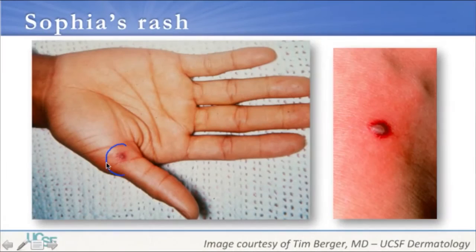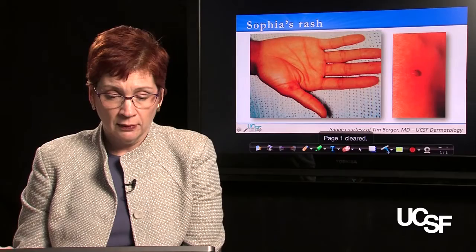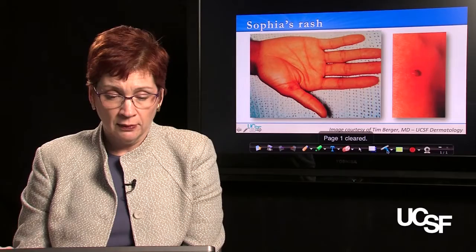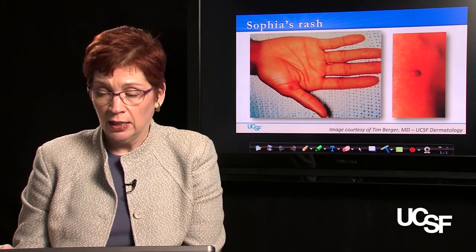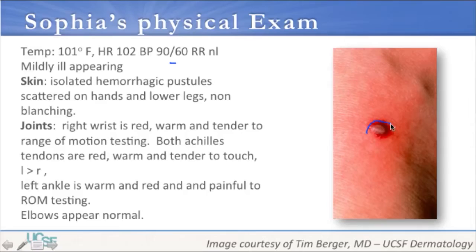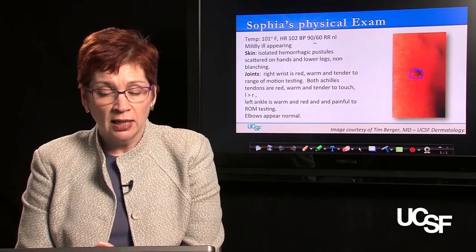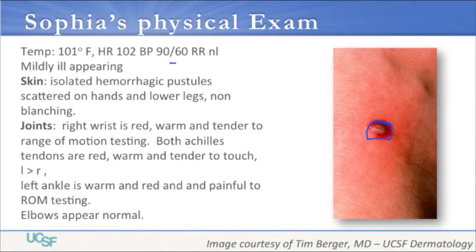This is Sophia's rash — you can see redness there. She has similar spots around her ankles and on her other hand. Sophia also has a fever; her temperature is 101 degrees Fahrenheit, her heart rate is slightly elevated at 102, and she has a normal blood pressure for age with a normal respiratory rate. She does appear mildly ill. Her skin shows isolated hemorrhagic — meaning bloody-appearing — pustules with some inflammation scattered on her hands and lower legs; they don't blanch when pressed. Her right wrist is red, warm, and tender to the touch and hurts with movement. Both Achilles tendons are red, warm, and tender; the left is much worse than the right. The left ankle is warm, red, and painful to range-of-motion testing. Her elbows, although she complained about them a few days ago, appear normal today.